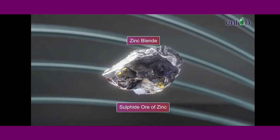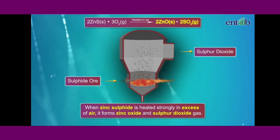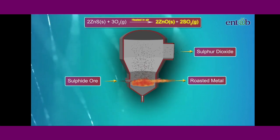Whereas, the sulfide ore of zinc, that is zinc blend, converts to zinc oxide and sulphur dioxide when strongly heated in the presence of air. Look carefully.